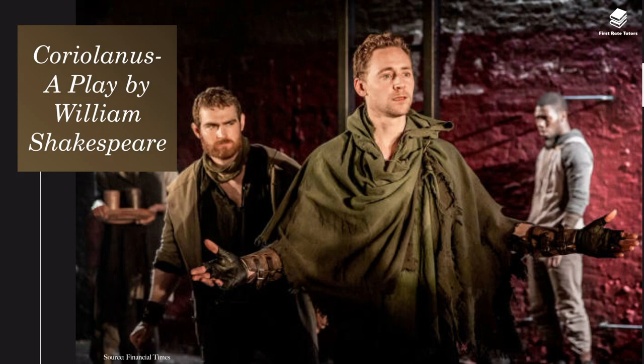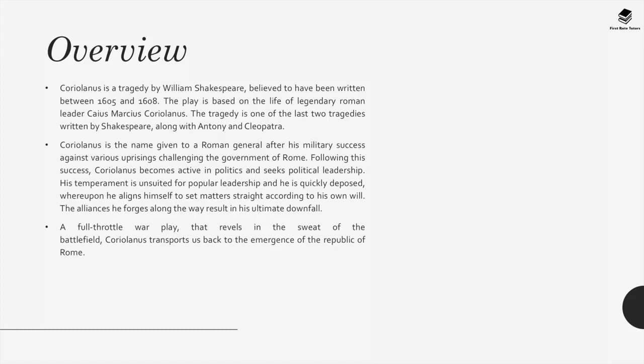Coriolanus is a tragedy by William Shakespeare, believed to have been written between 1605 and 1608. The play is based on the life of legendary Roman leader Caius Martius Coriolanus, and is one of the last two tragedies written by Shakespeare, along with Antony and Cleopatra. Coriolanus is the name given to a Roman general after his military success against various uprisings. Following his success, Coriolanus enters politics, is quickly deposed, and the alliances he forges result in his ultimate downfall.